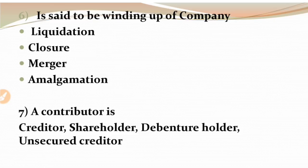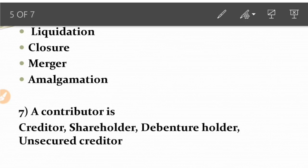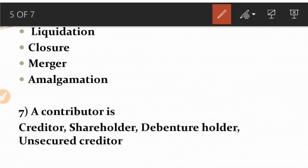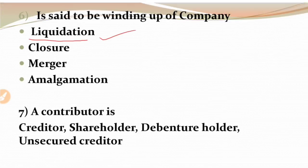MCQ 6: What is the winding up of a company called? Options are liquidation, closure, merger, or amalgamation. Winding up of a company means liquidation. Closure is also an option, but liquidation is the most appropriate answer. MCQ 7: A contributor is - options are creditor, shareholder, or debenture holder.